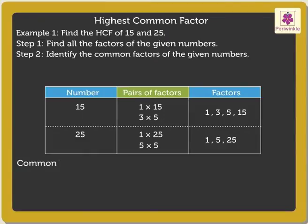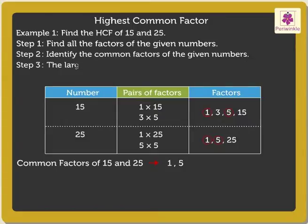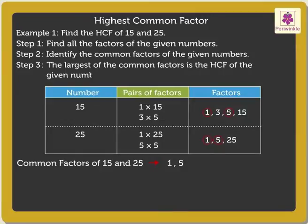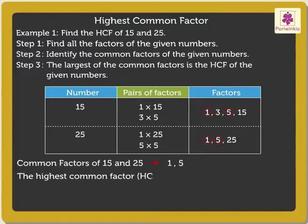Here the common factors of numbers 15 and 25 are 1 and 5. Step 3: the largest of the common factors is the HCF of the given numbers. Here the largest of the common factors is 5. Thus the highest common factor is 5.